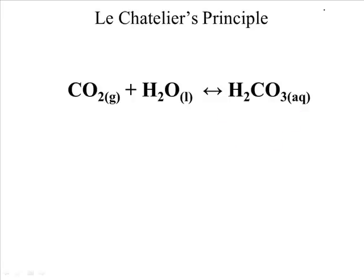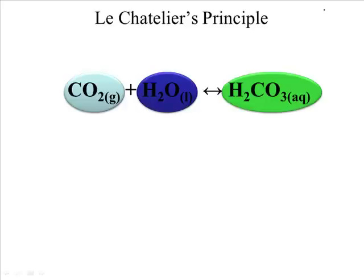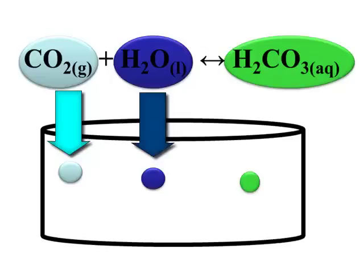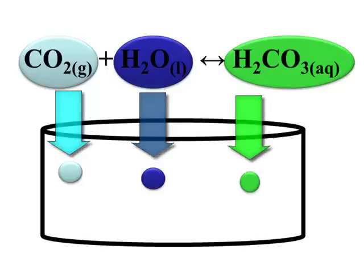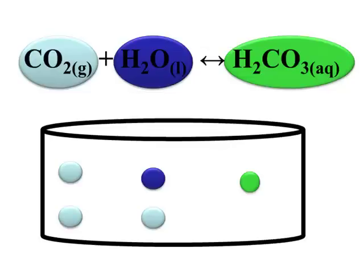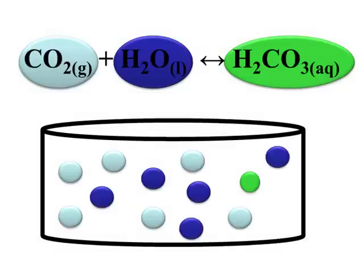Let's represent the molecules: CO2 as small blue dots, H2O as dark blue dots, and carbonic acid as green. For every one molecule of CO2 and one molecule of H2O, you can theoretically make one molecule of H2CO3. However, this reaction establishes an equilibrium, and the Keq for this reaction is much less than 1. That means the reaction favors reactants — if you mix CO2 and water, you'll still have a lot of CO2 and water, and maybe just one or two molecules of carbonic acid.